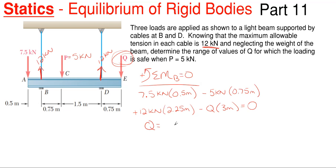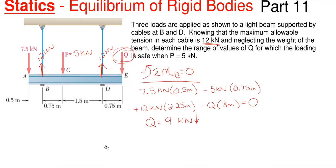You would just rearrange and solve for Q because it's your only unknown in this equation, and you end up with 9 kilonewtons of force in that downward direction. So that's one of my range values. So let's find the other, repeating the process,